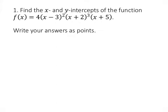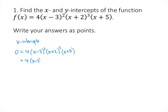The x-intercepts are the points where y equals 0. Remember that f(x) is just another way to write y, so we want to solve 0 equals 4 times (x minus 3) squared times (x plus 2) cubed times (x plus 5). When we have a factored expression set equal to 0, one of the factors has to equal 0. Now x minus 3 squared means x minus 3 times x minus 3, and x plus 2 cubed means x plus 2 times x plus 2 times x plus 2, and then we have x plus 5.